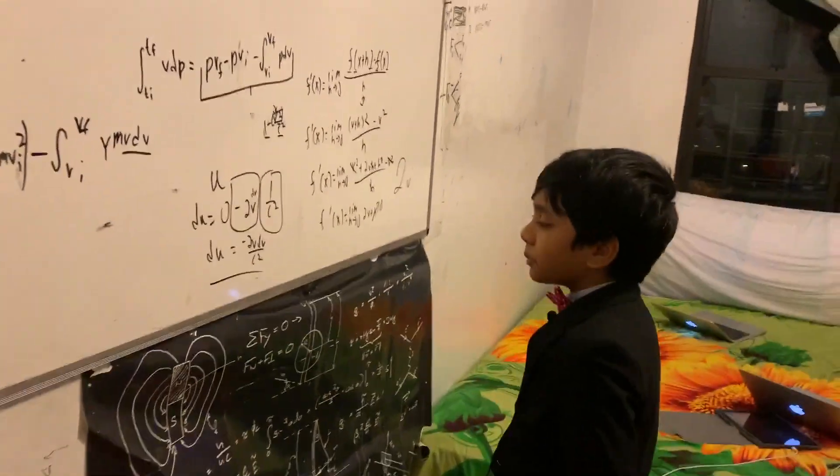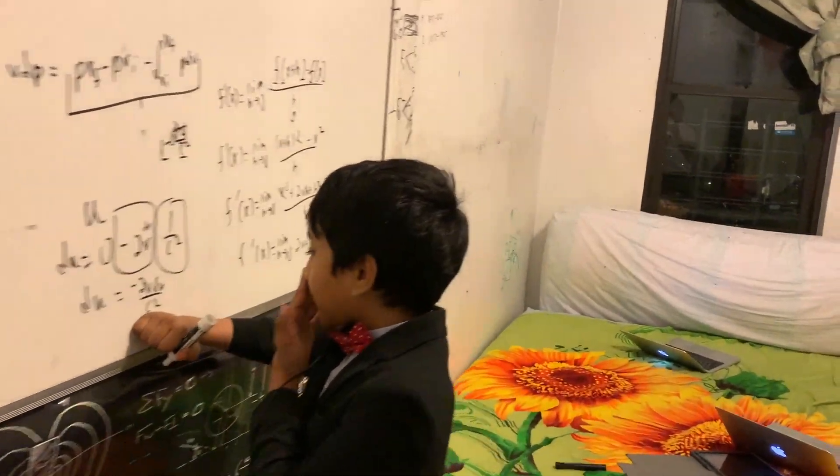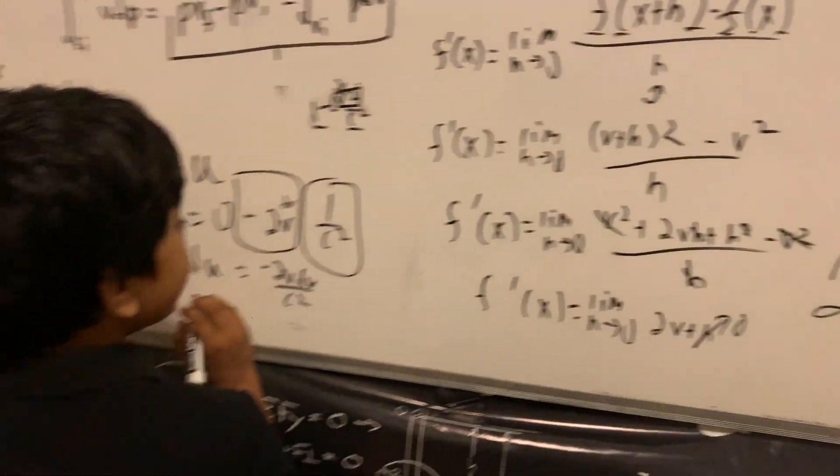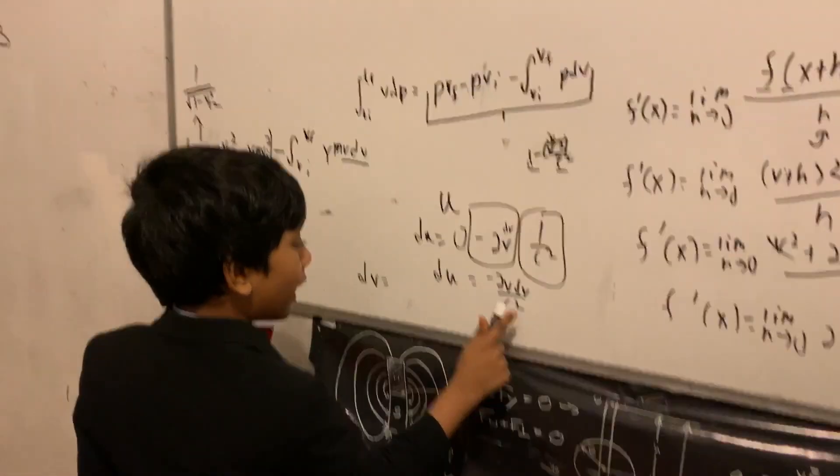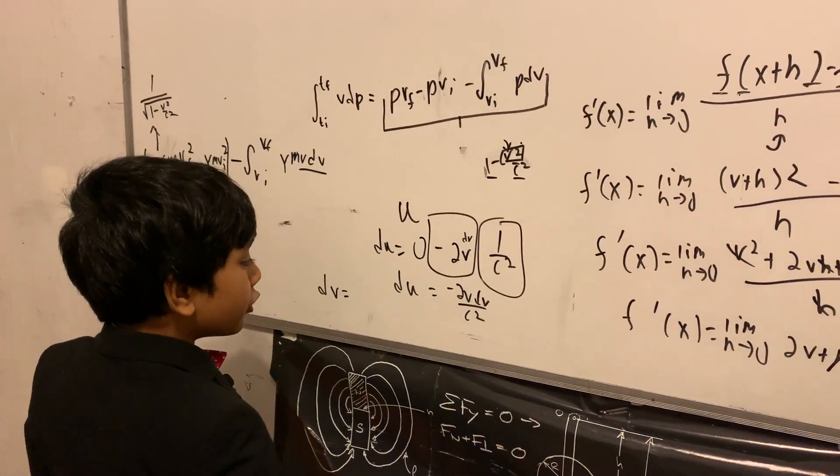Now, if we rearrange this, show that dV is on the left side and only dV, we get this. We divide both sides by negative 2V over C squared,